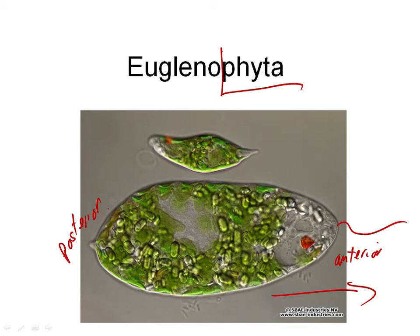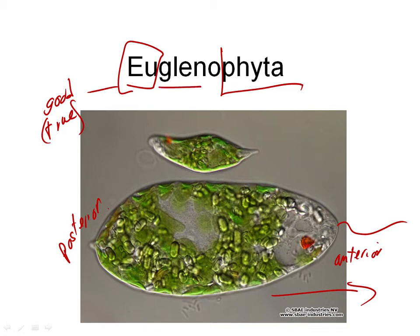Phyto, of course, is the division ending. 'Eu' means good or true — I always like to think of it as meaning true. And this root 'glen,' G-L-E-N, means pit or socket. That refers to the invagination — there's a little cavity that sits down at the anterior end of euglena. I'll show you a drawing of that in more detail in a minute.